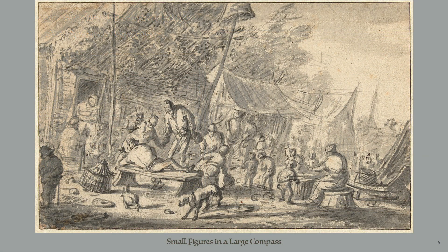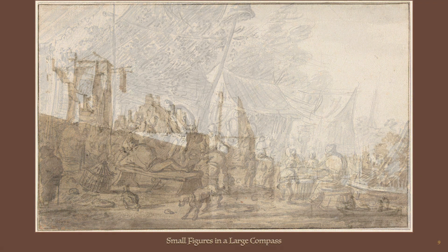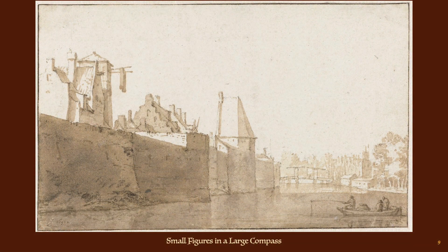Here is another example of small figures in a large compass, as noticed by figures receding into the fading distance when compared to the stronger shadows and details of the foreground figures, animals, and structures. Here is another consideration of small figures in a large compass — note also the successively fading distant grounds.